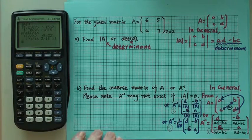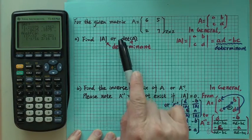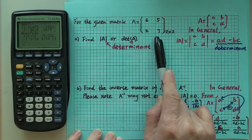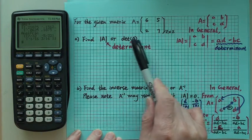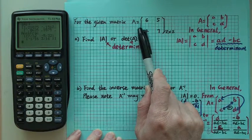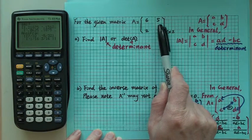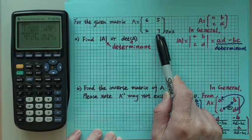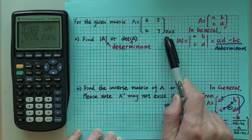In this lecture, we want to look at this typical example. Given matrix A, which is 6, 5, 2, 7, this is a 2 by 2 matrix.